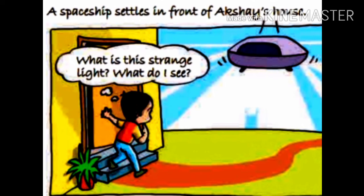A spaceship settles in front of Akshay's house. Akshay cha gharasam or ek antaryan utarte. Then Akshay said, 'What is this strange light?'